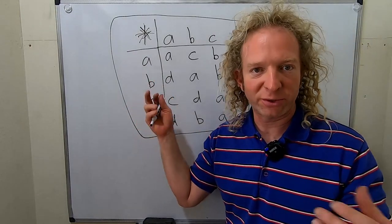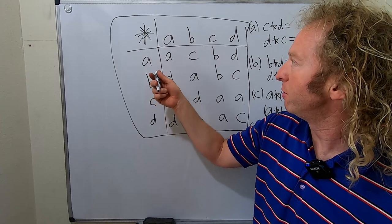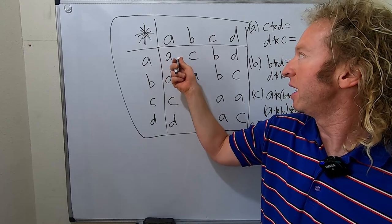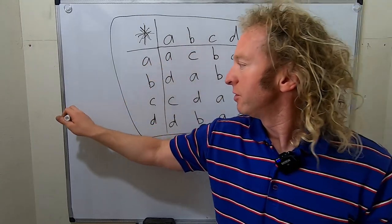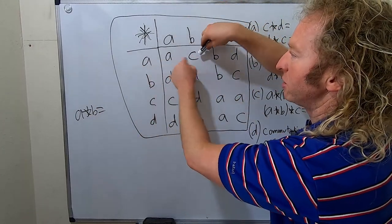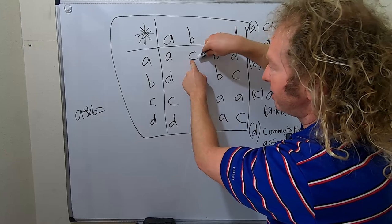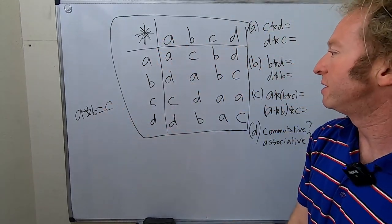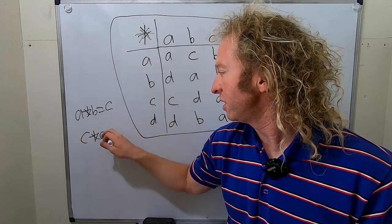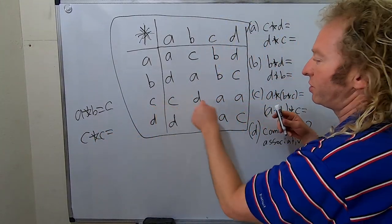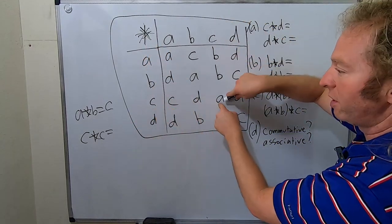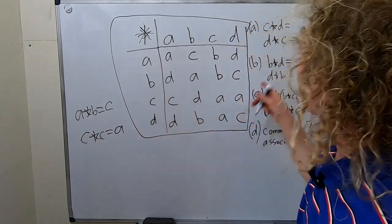You can just use the table to compute the operation. For example, b star a gives d, and a star a gives a. If you want to compute a star b, you go to the table, find row a and column b, and that gives c. Similarly, c star c: you find row c and column c, and that gives a.